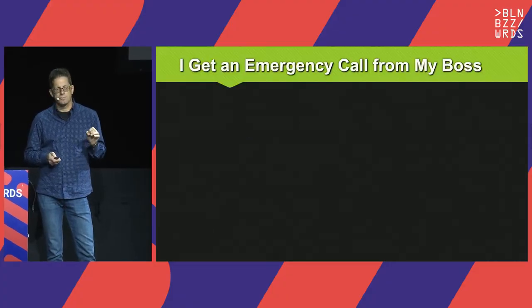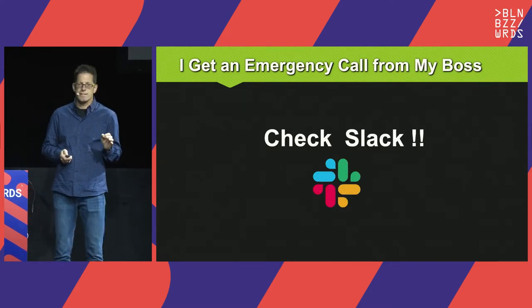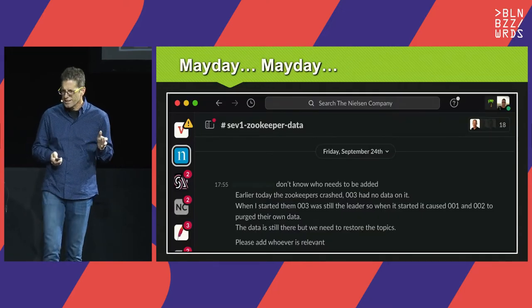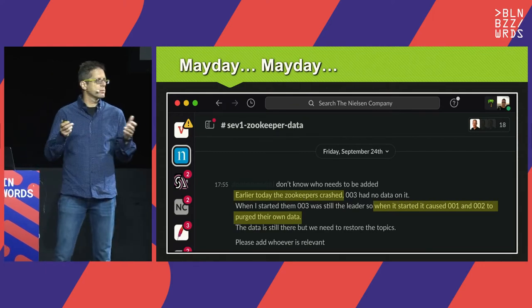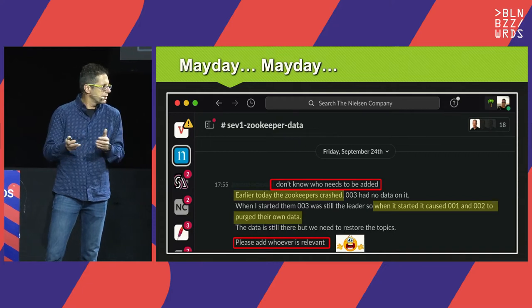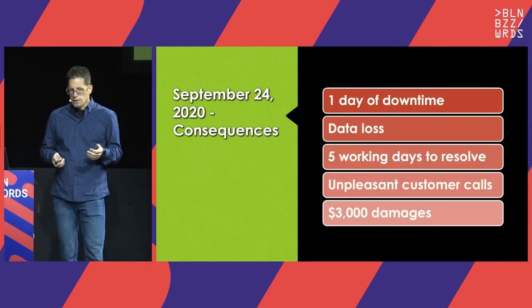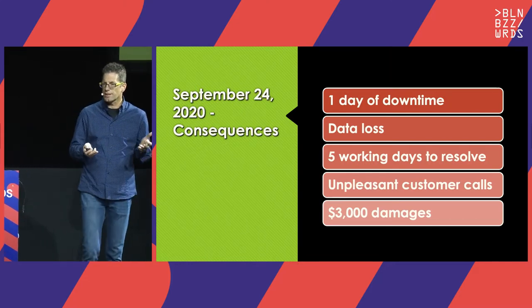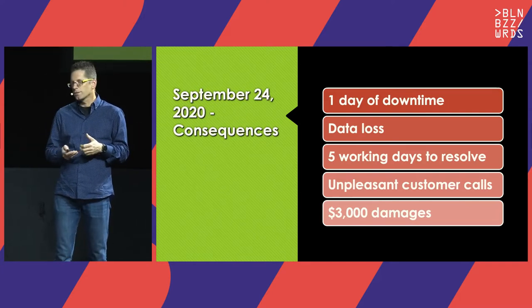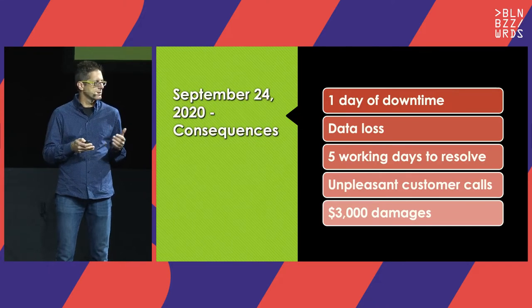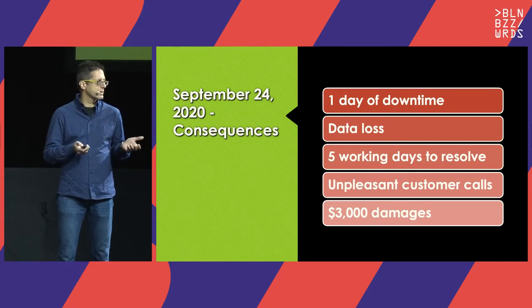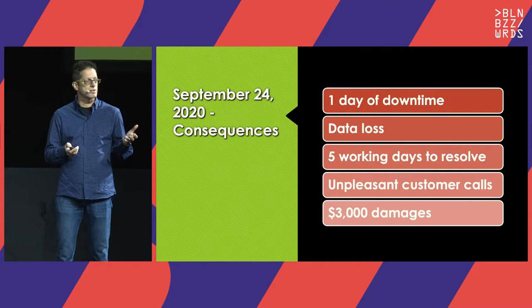I want to tell you a true story that happened to us at Nielsen Marketing Cloud. September 24th 2020, 5:55 p.m. — I get an emergency call from my boss and he says check Slack. I see: earlier today the ZooKeeper crashed, we lost some of the brokers, there was data loss. We had an outage; Kafka was down. The results were one day of downtime, data loss, five engineering working days spent fixing this, a few unpleasant customer calls, and about $3,000 in reprocessing costs.